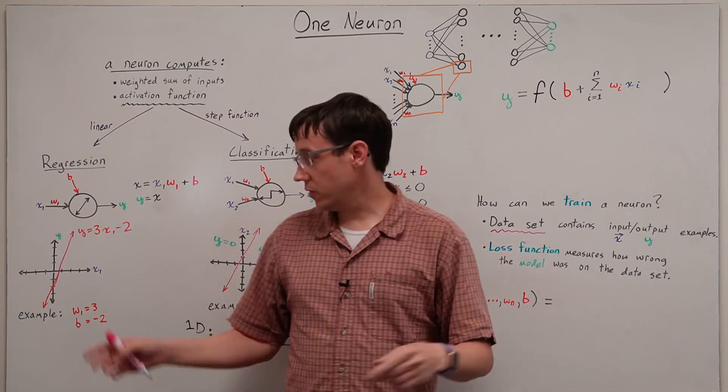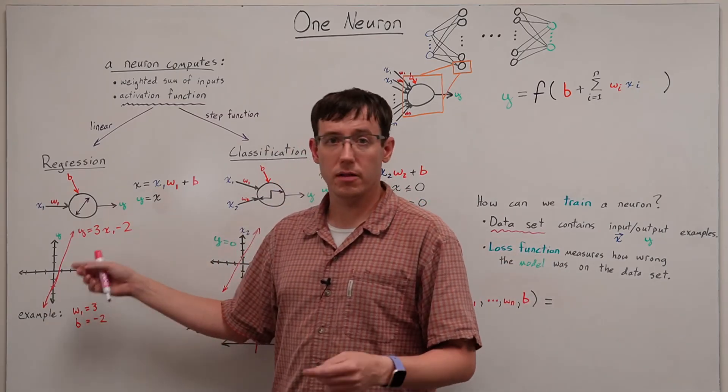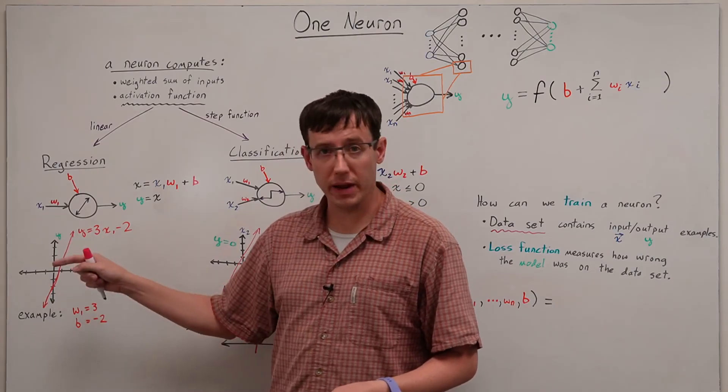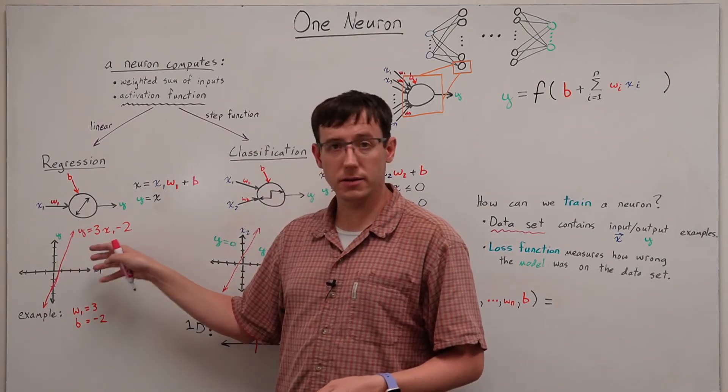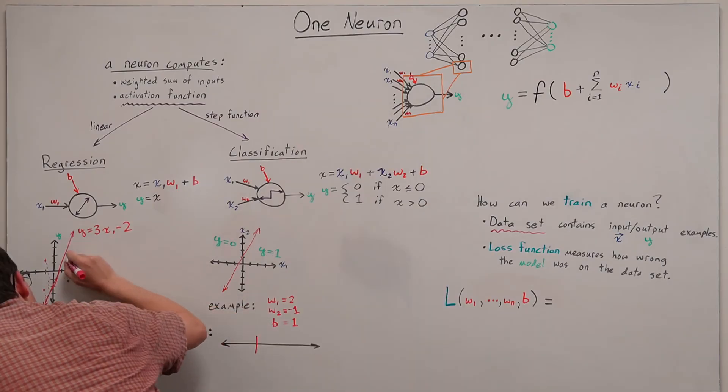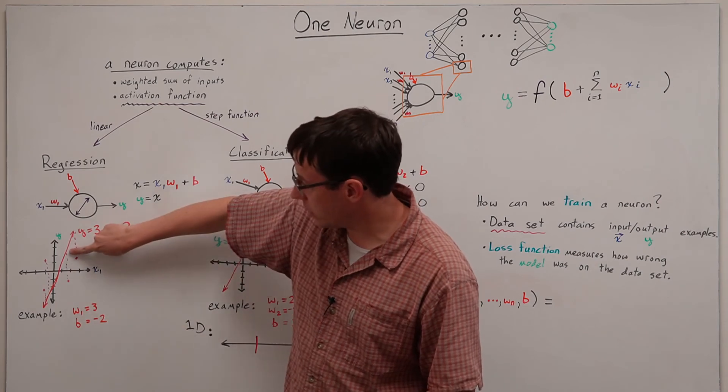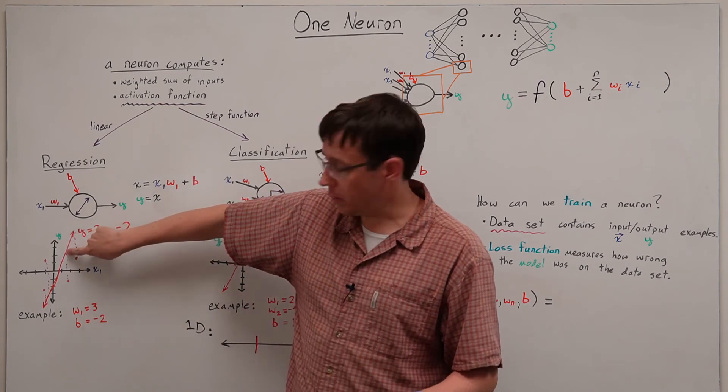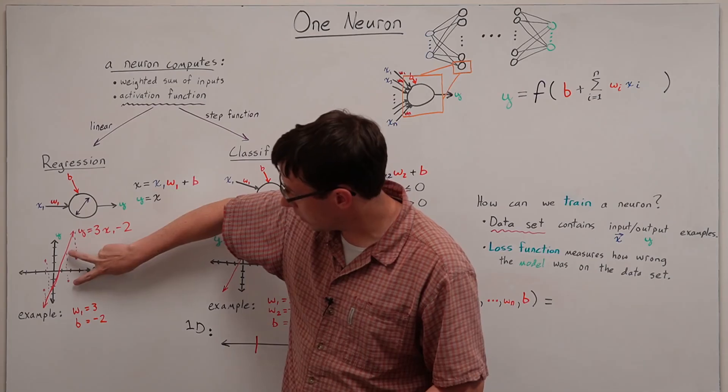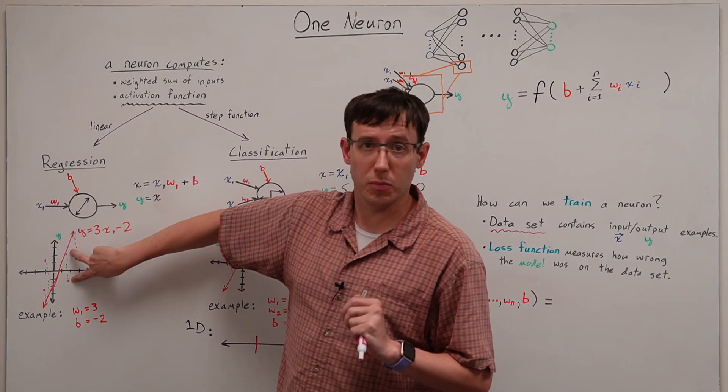If our data set is for one-dimensional regression like this example, then we will have input-output pairs that we can plot on this graph. And the loss function should be based on how far is the prediction that the model makes for certain inputs from the value in the data set at those inputs.